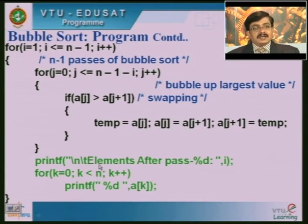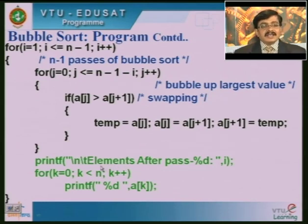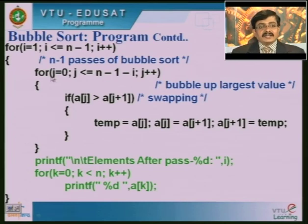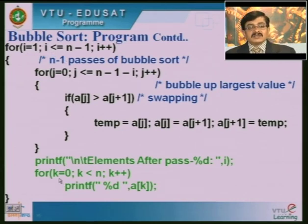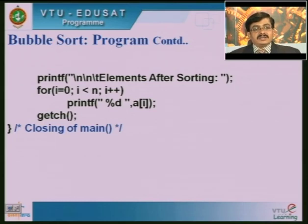Instead of printing only the sorted list, the code with green statements shows how the highest element bubbles up after each pass — pass 1, pass 2, pass 3, and so on. A separate variable k is used here because i and j are already loop iterators. After all n−1 passes, we print the elements after sorting using a loop with i from 0 to n.